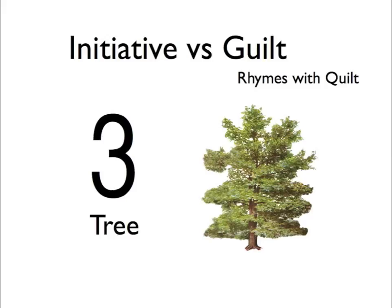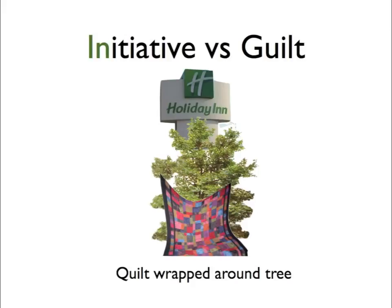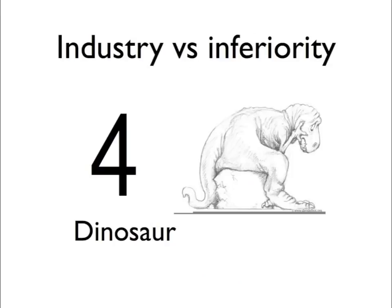Number three is initiative versus guilt. Three, if you remember, is a tree. So what can we do with this tree to use initiative or guilt? Initiative starts with 'in' — why don't we use Holiday Inn? Put that behind the tree in your mind. Now guilt rhymes with quilt. So let's take this quilt and wrap it around the tree. So when we think three is a tree, we will see a Holiday Inn behind it and a quilt wrapped around it — initiative and guilt.